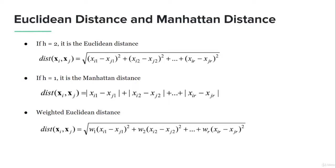The weighted Euclidean distance uses the Euclidean formula (h=2) but multiplies weights — a hyperparameter that must be decided based on application context. This gives a boost to the differences. For example, if your data values are in micro-millimeters and extremely small, standard Euclidean or Manhattan distance may not work well. Multiplying by weights makes the numbers larger, making it easier to compute similarity, even though it doesn't affect the underlying similarity or dissimilarity.